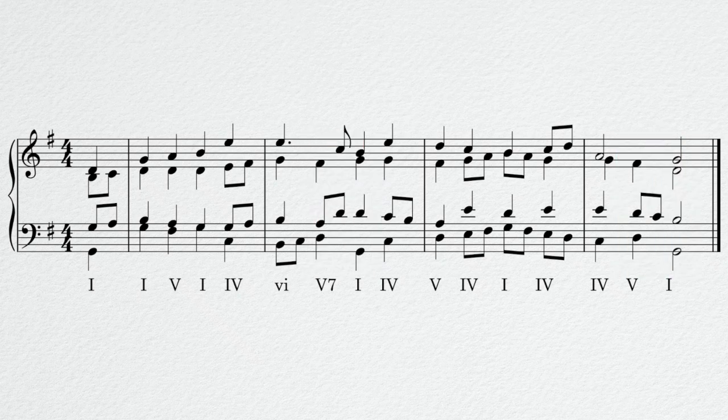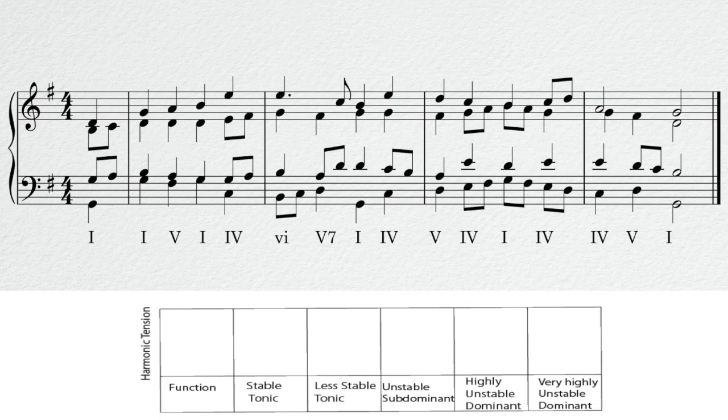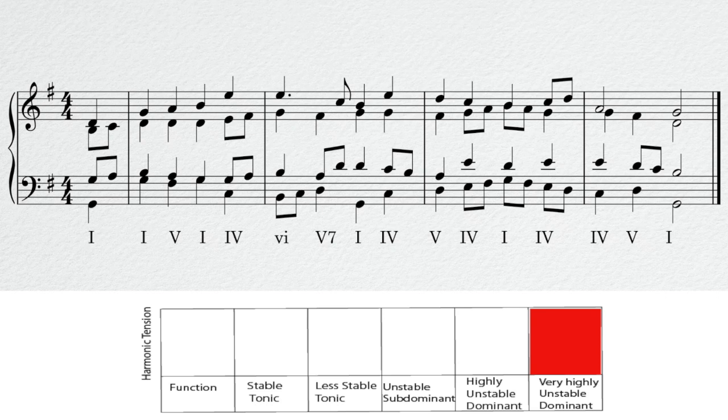Okay, let's listen again, and this time imagine that we have some sort of harmonic instability sensor that will display the amount of tension or stability in music. The meter is going to have 5 levels: stable tonic functions, that will be the 1 chord, less stable tonic functions, that's either the 3 or the 6, instability, that would be the subdominant functions, high instability, dominant function, and very high instability, that would be dominant functions with both half-step tendency tones, meaning usually the 5-7 chord.